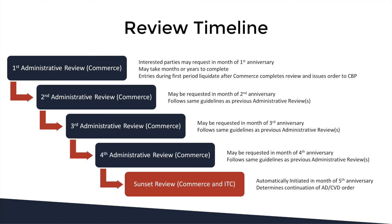When do those entries liquidate? That has to do with the review timeline. A year after the final determination is issued, interested parties may request an administrative review in the month of the first anniversary. The Department of Commerce looks to determine the final rate for the last period of anti-dumping or countervailing entries, as well as determining the rate for the next period. This may take months or years to complete — it could be one year, two years, three years; we've seen eight years.